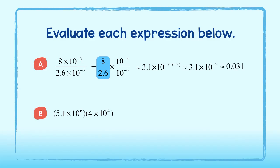Okay, and for part B, we will use the commutative property to rewrite this multiplication problem like so. 5.1 times 4 gives us 20.4. The product rule tells us to add exponents to get 10 to the tenth power. Remember, don't stop there. Since our first factor is greater than 10, we must manipulate it to truly get it into scientific notation.